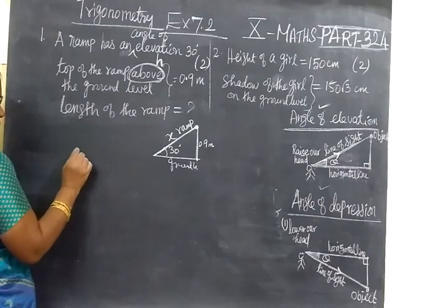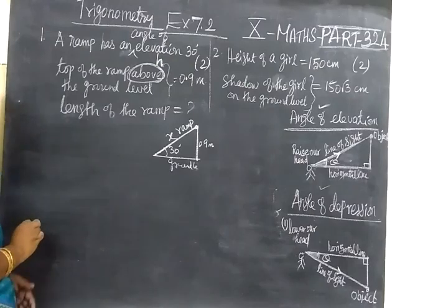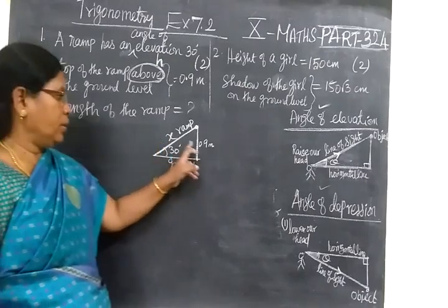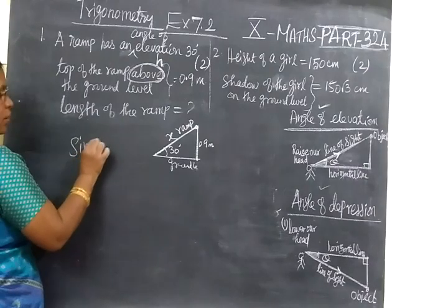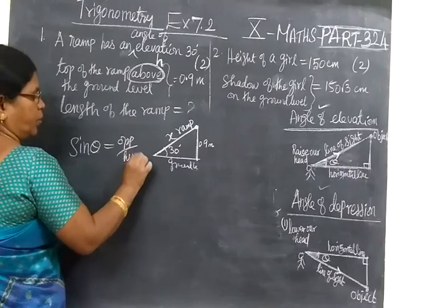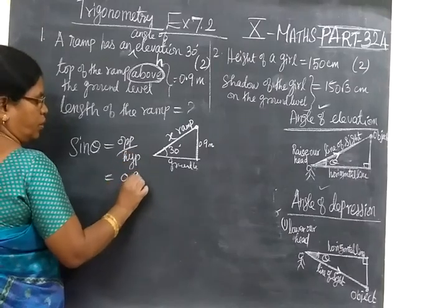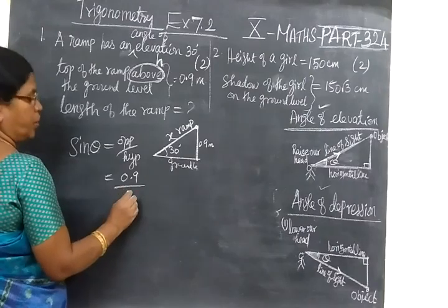And 30 degrees, length of the ramp we have to find. Now to find - this is opposite side, hypotenuse. So the trigonometric ratio connecting opposite side and hypotenuse is - we know it is sine theta. Sine theta equals opposite side over hypotenuse. Opposite is 0.9, then hypotenuse x.